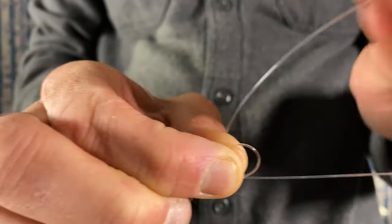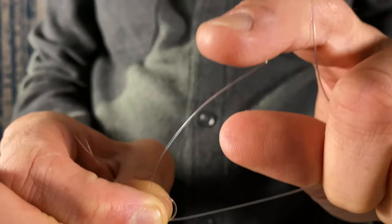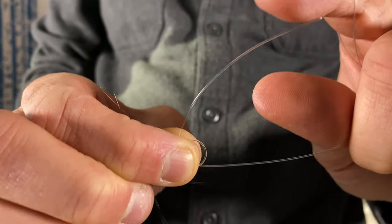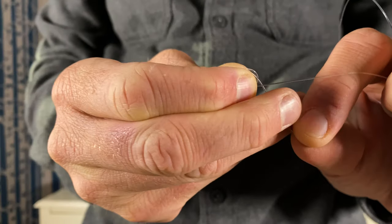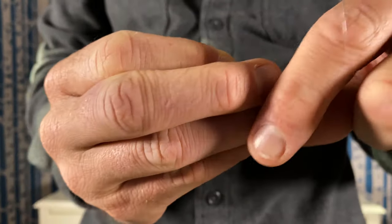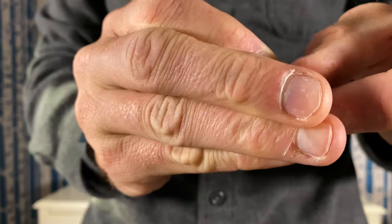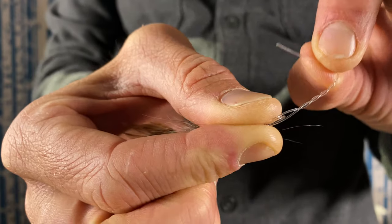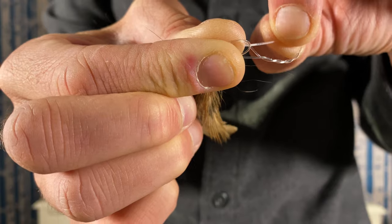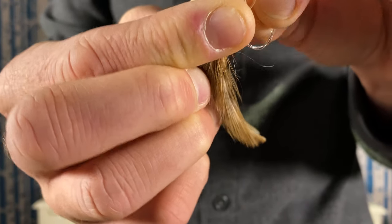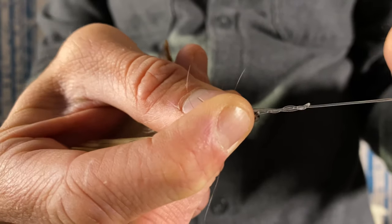And then I just use that tag end to wrap around the line. And then here's the critical part - there's two loops now off the front of the eye of the hook that I've created, and I'm just going to pass the line back through those two loops.